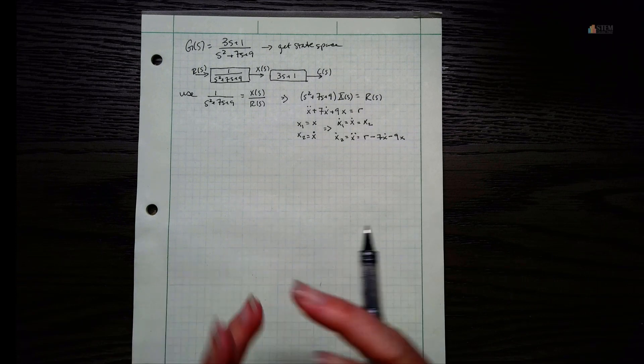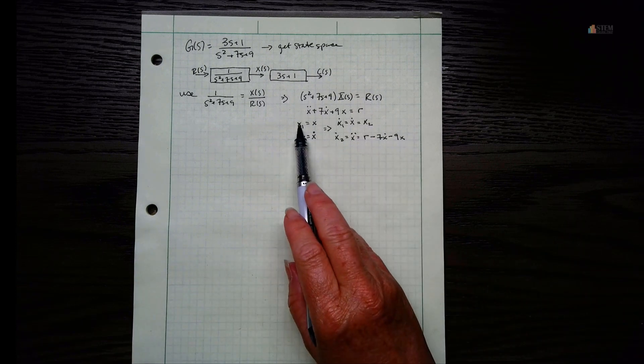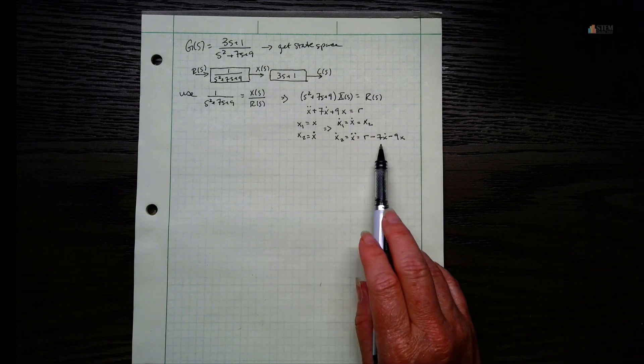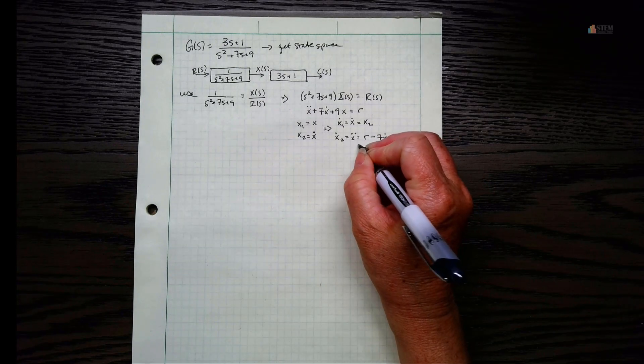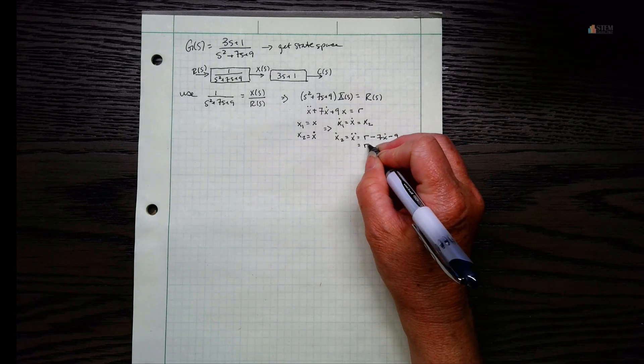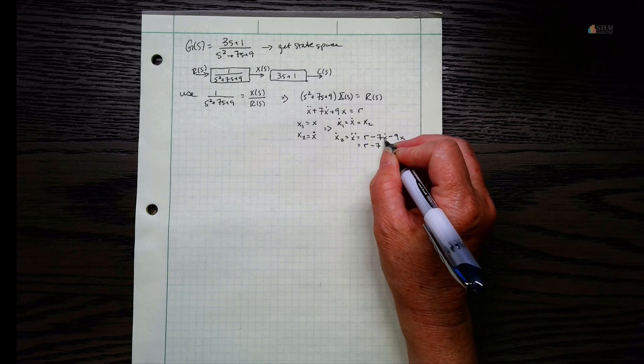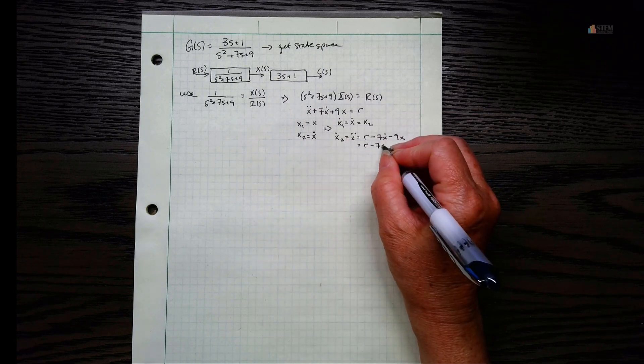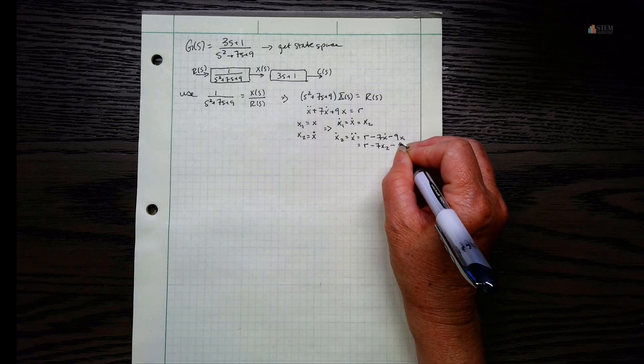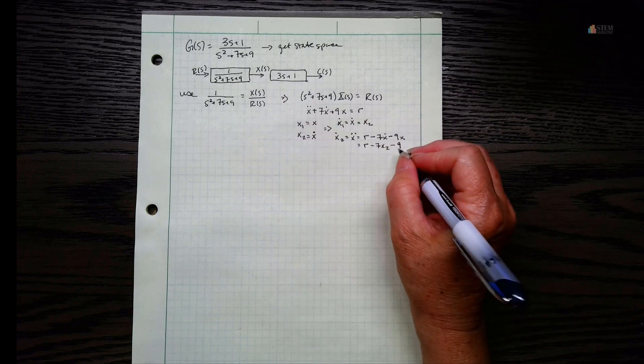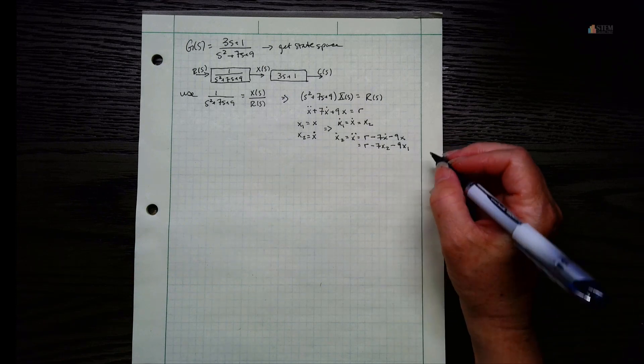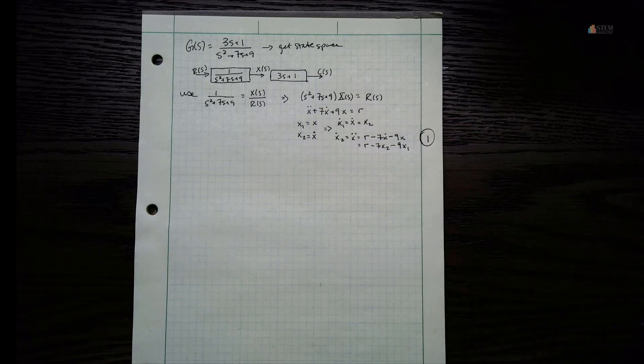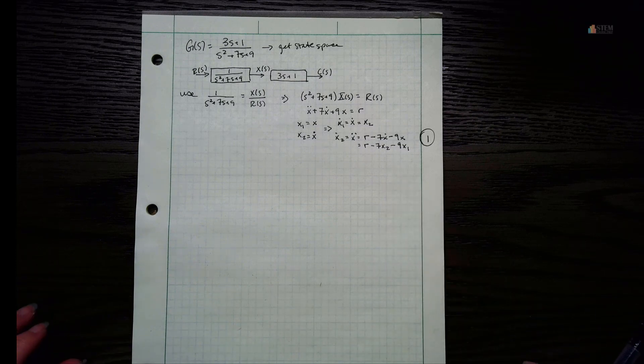Now remember when we're switching over to state space, I want to use these system variables. So I want to get rid of the X dot and then the X. That means that we're going to rewrite this as R minus 7X dot becomes X2, and then minus 9X becomes X1. Let's hang on to this - we'll just call this number 1. We'll use it in a minute when we write out the actual matrices here.